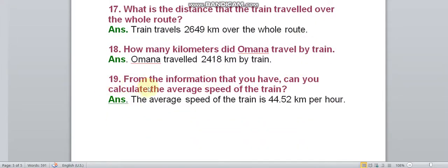Question number 19: From the information that you have, can you calculate the average speed of the train? The answer is the average speed of the train is 44.52 km per hour.